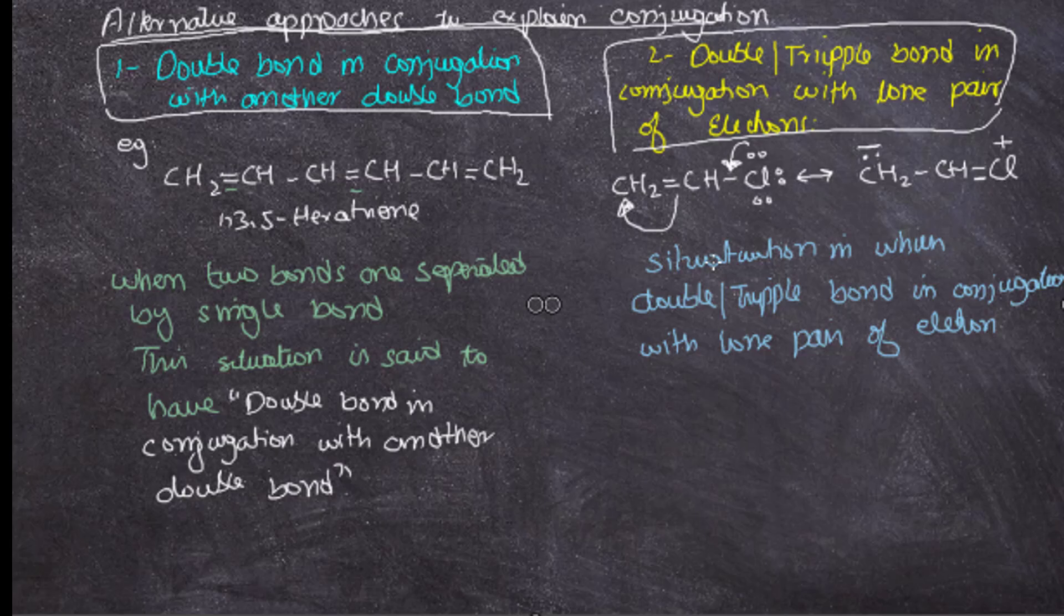Now let's discuss double or triple bond in conjugation with lone pair of electrons. Consider this example: CH2 double bond CH and Cl. There is a tendency that the lone pair of electrons present over chlorine might move towards the carbon atom, and this carbon atom in turn, the double bond will move towards the bonded carbon atom.